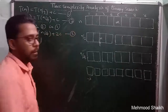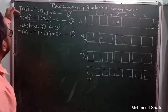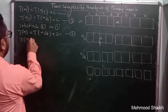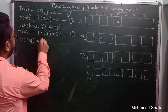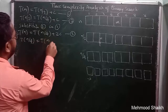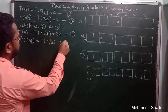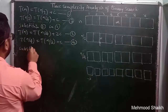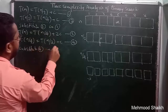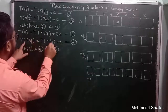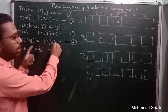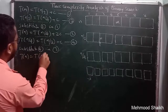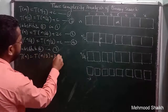Next, T(n/4) = T(n/8) + c, marked as equation 4. Substituting equation 4 into equation 3 gives T(n) = T(n/8) + 3c, marked as equation 5.